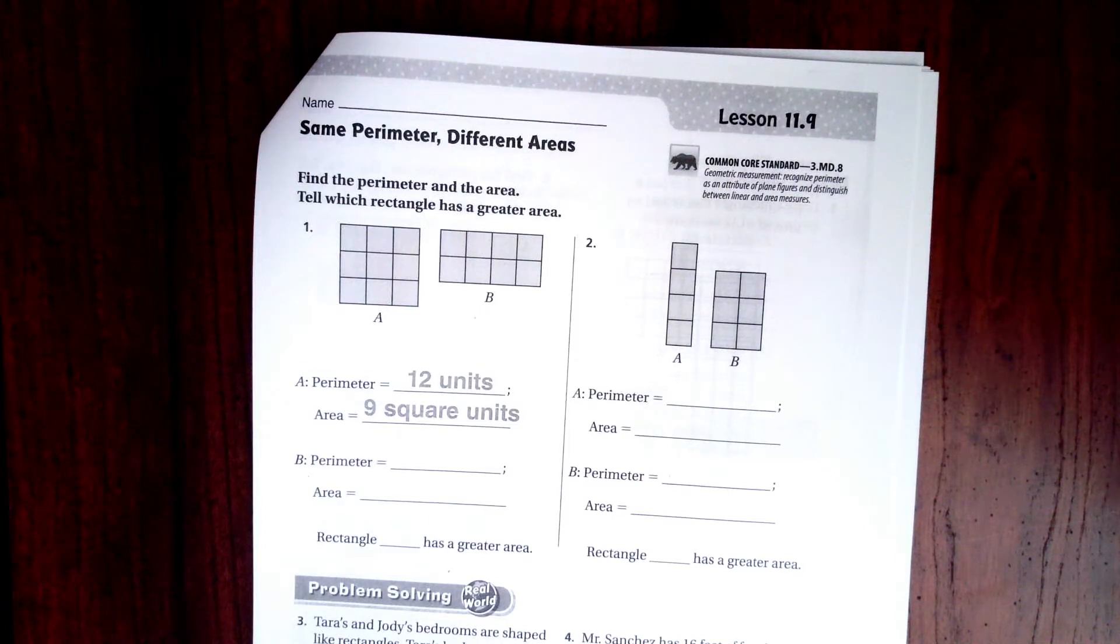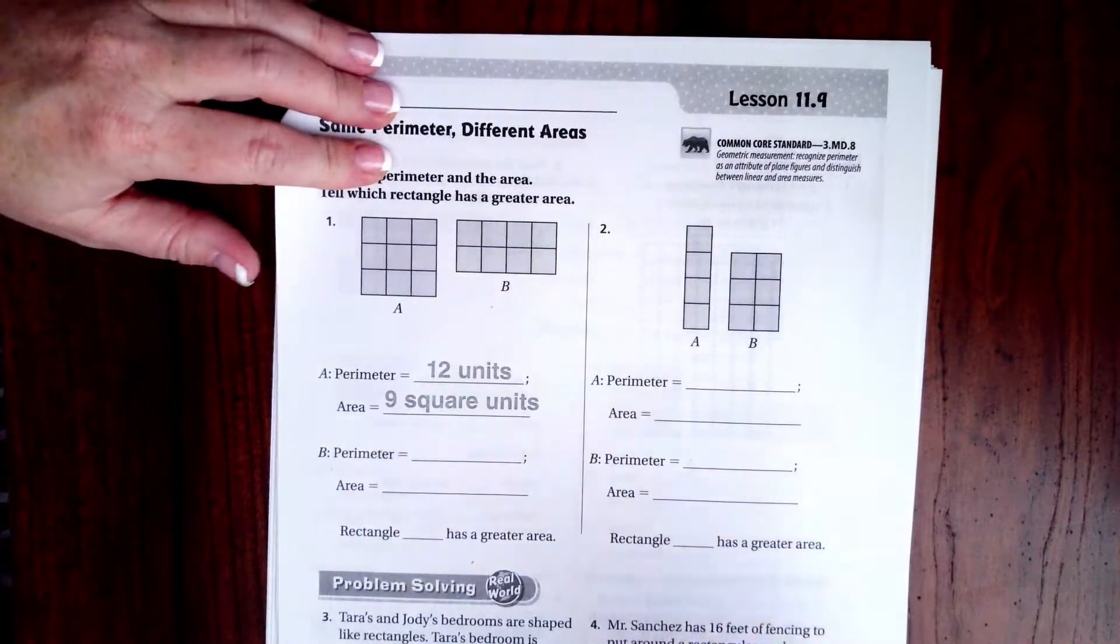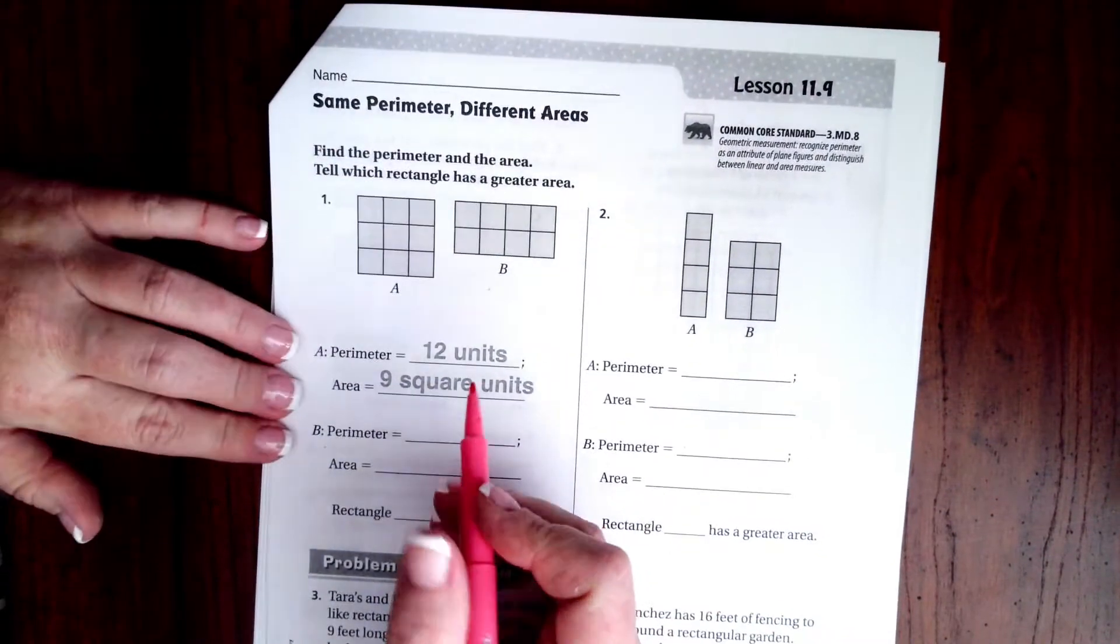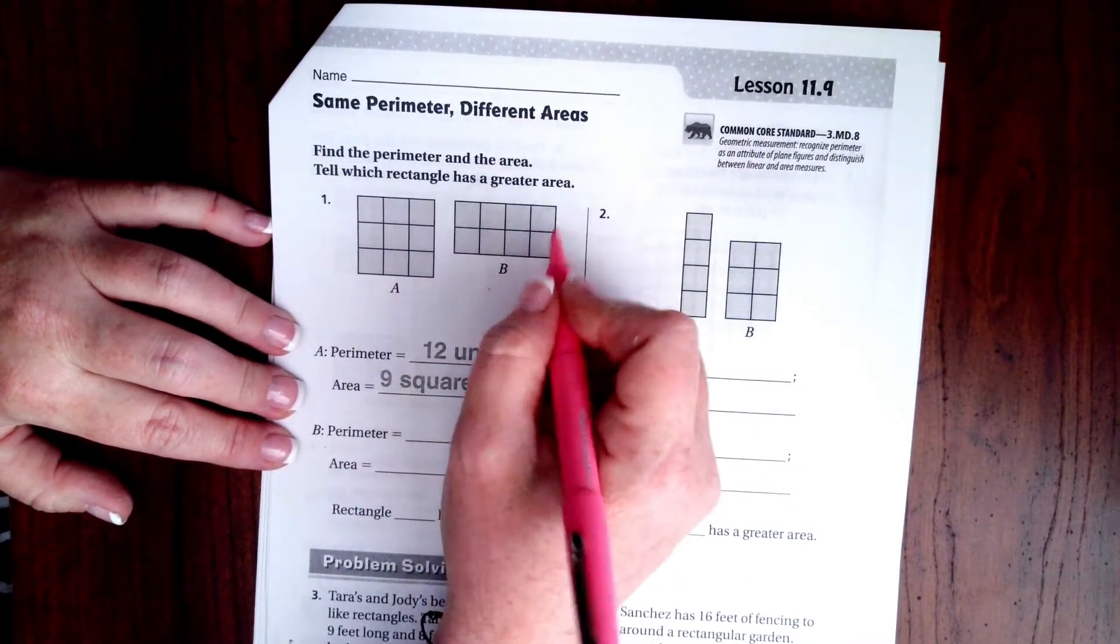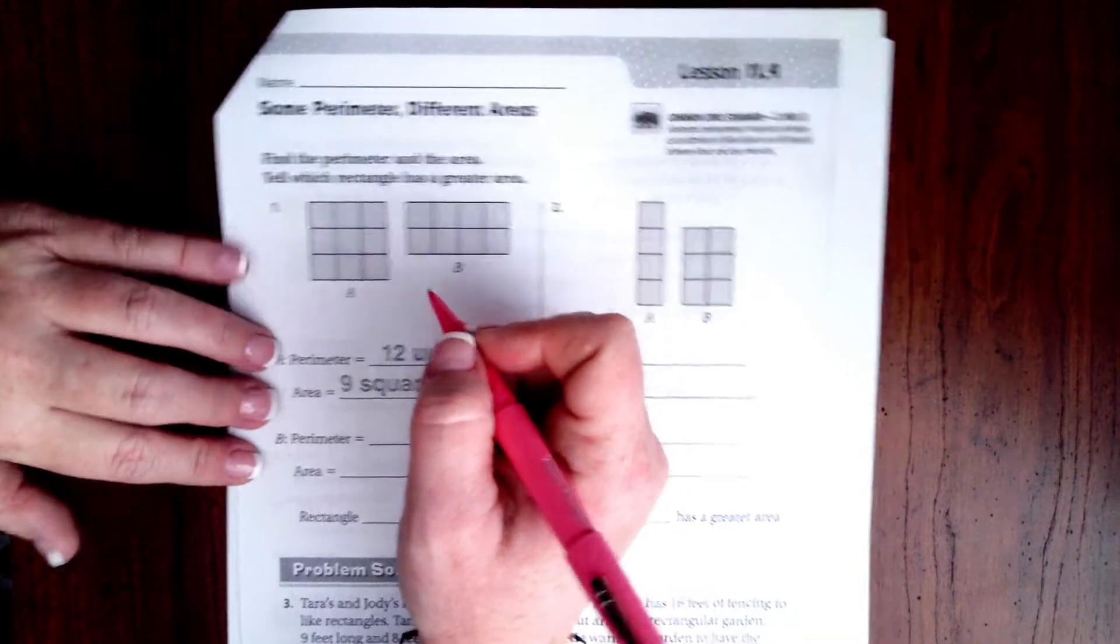Hi guys, welcome to third grade, chapter 11, lesson 9. We're going to go ahead and get started with number 2. Actually, we're going to finish number 1. Sorry about that. So, perimeter is just counting how many are around it. Area is multiplying length by width, okay?